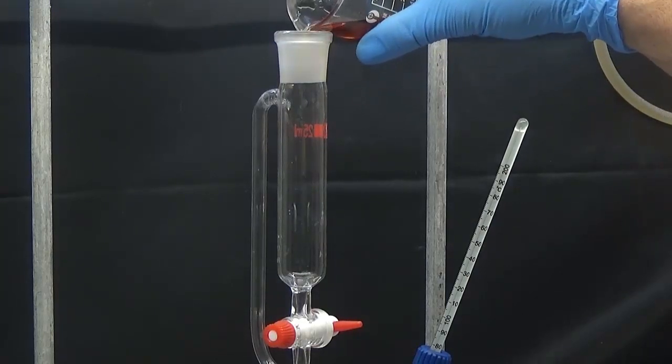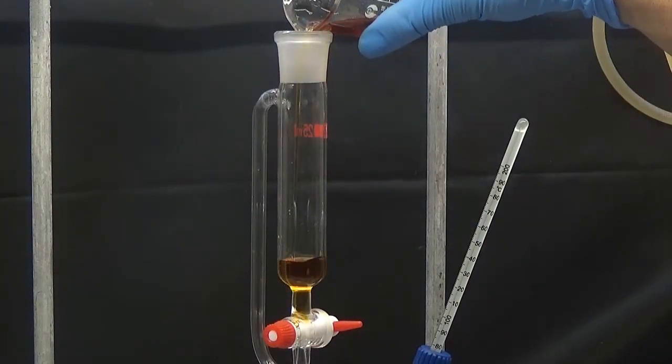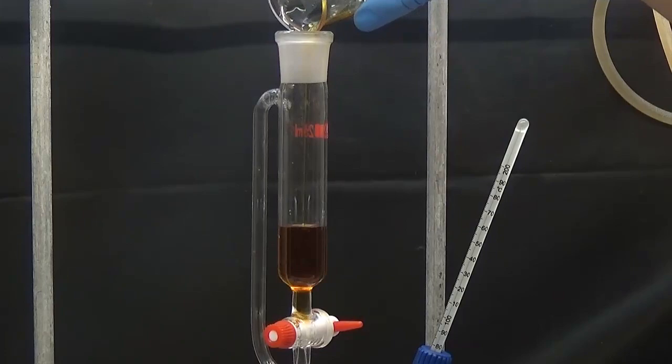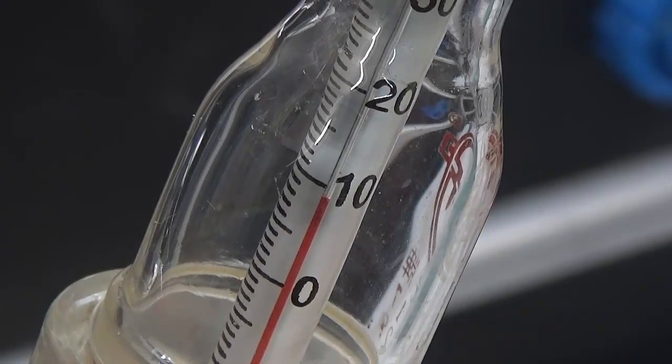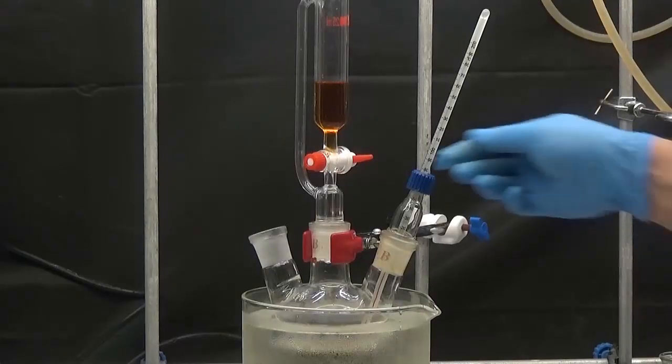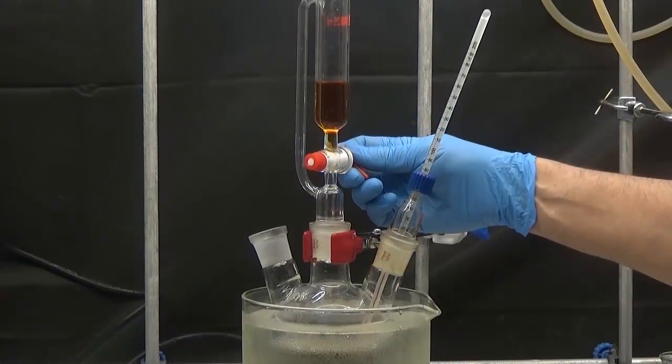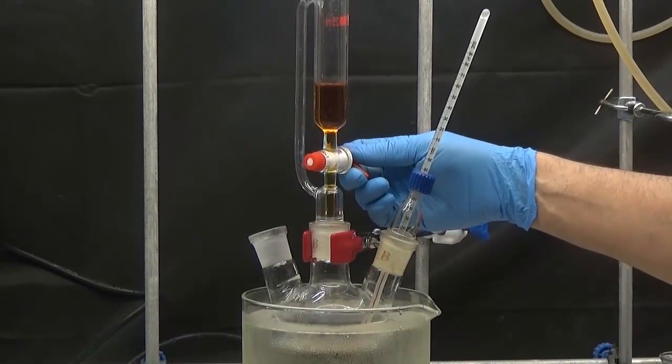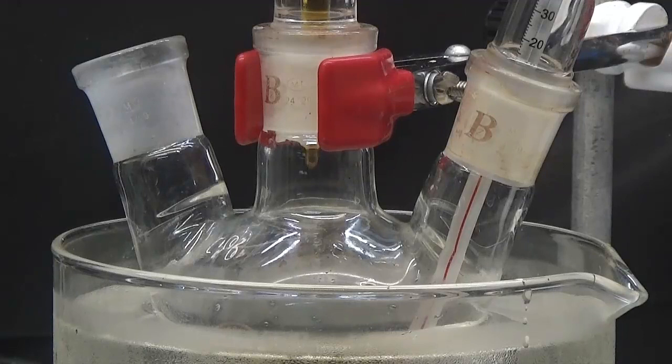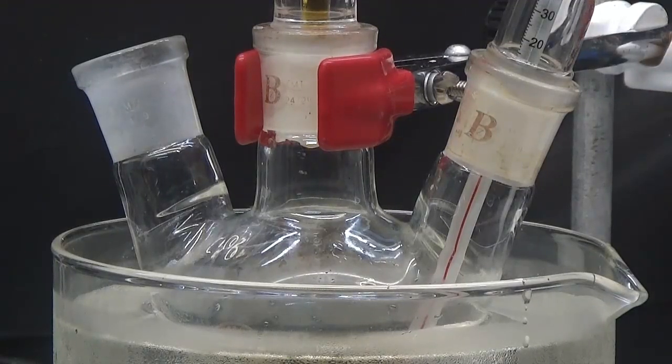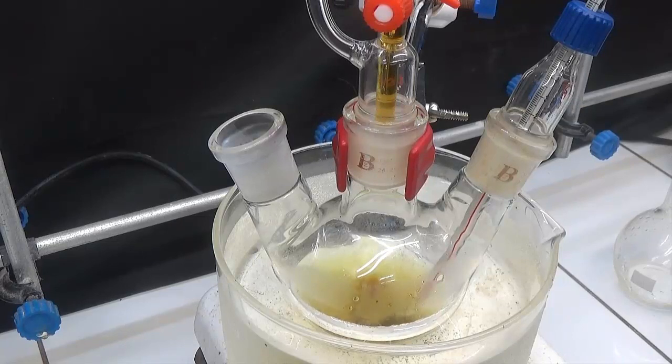We put the resorcinol solution in the addition funnel. Once the temperature of the sulfuric acid is below 10°C, the resorcinol solution is added with a slow drip. Do not let the temperature increase more than 10 degrees Celsius while adding.